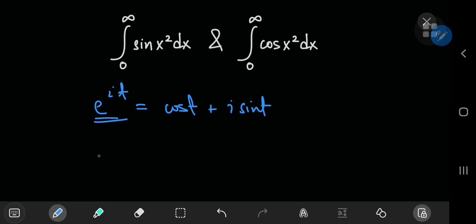Specifically, I'm going to be replacing t with negative x squared. So we have cosine of negative x squared plus i times sine of negative x squared.